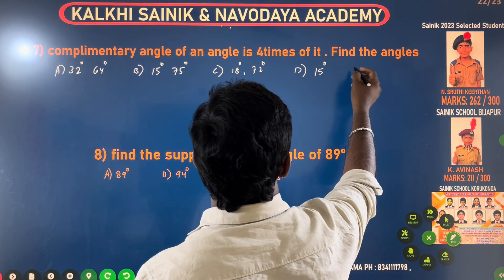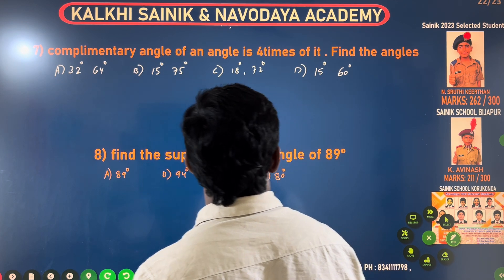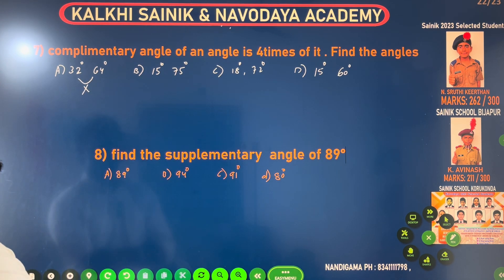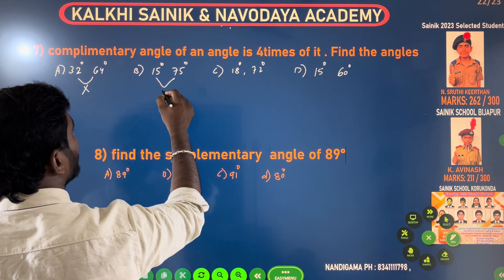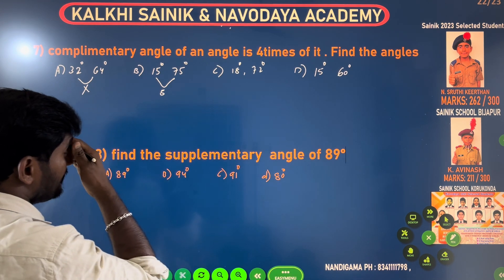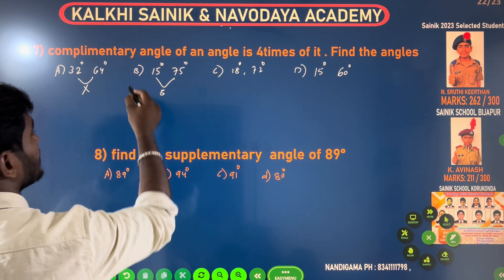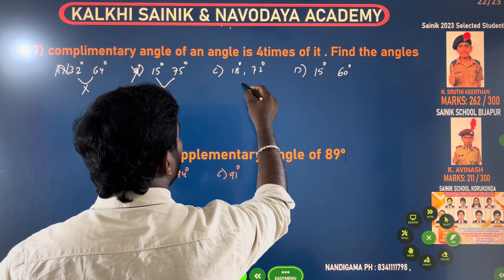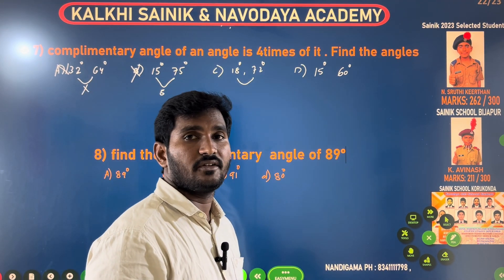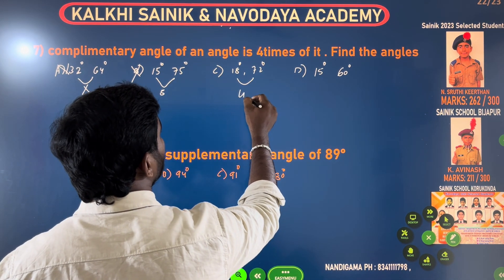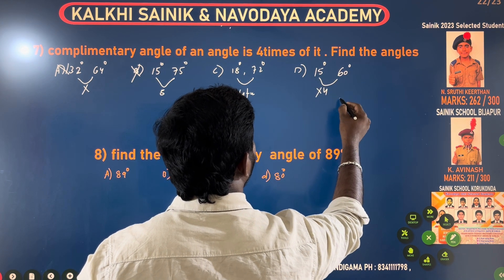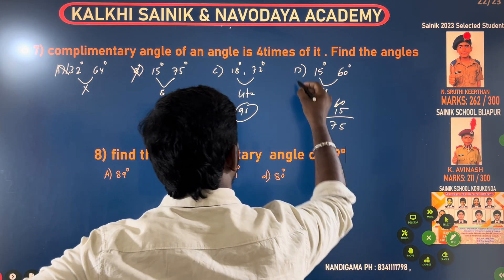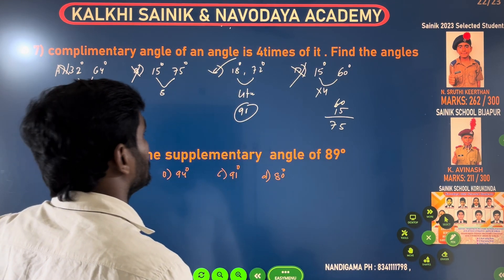The next one would be 60 degrees. If I say 4 times, it's 32 and 64 degrees. If I say 5 times, it's 90 degrees. 18 degrees times 4 equals 72 degrees. 72 is 4 times exactly. But 60 plus 15 is 75 degrees, and 18 plus 72 is 90 degrees. Option C is right — 18 and 72 degrees.